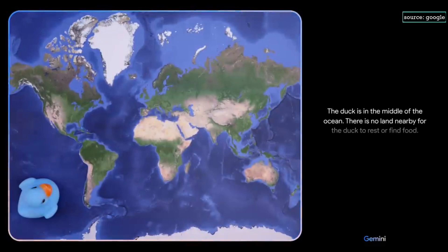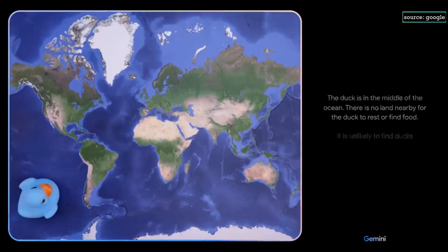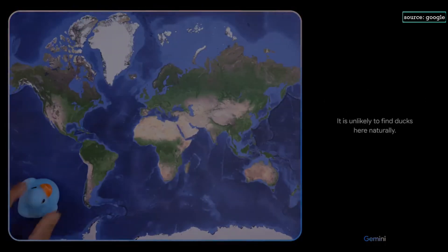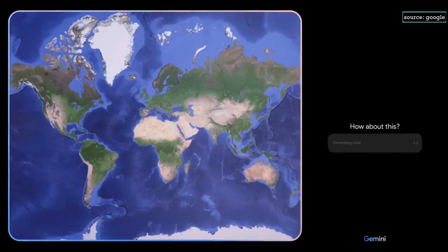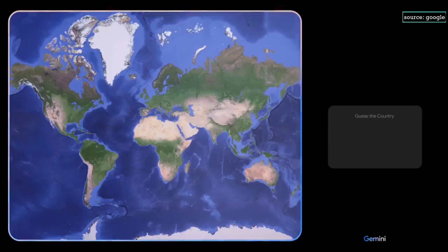The duck is in the middle of the ocean. There is no land nearby for the duck to rest or find food. It is unlikely to find ducks here naturally. Okay, based on what you see, come up with a game idea. And use emojis, please. How about this? We can play a game called, guess the country. Sure, let's do it.